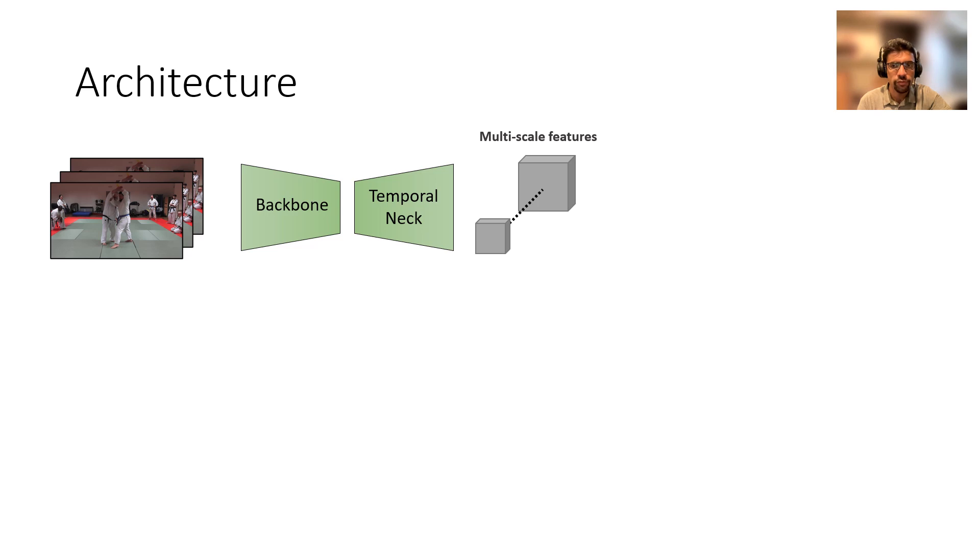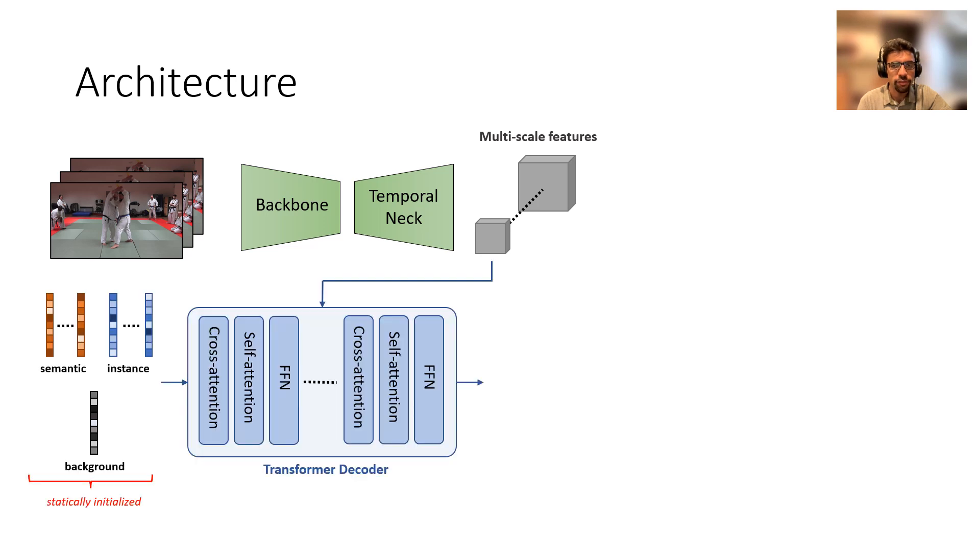We start off with a sequence of video frames which go through a backbone network followed by a so-called temporal neck which we will discuss shortly. For now, it suffices to know that it outputs a set of multi-scale video features. Then, for instance segmentation, we initialize a set of instance queries to capture any number of objects in the video.